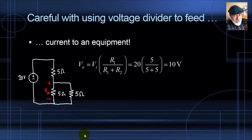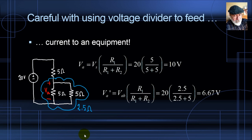But no — if the new device has an equivalent resistance of 5 ohms, connecting it in parallel with the bottom of the voltage divider gives an equivalent resistance of 2.5 ohms (5×5/(5+5)). Now 2.5 ohms is only one-third of the new total resistance of 7.5 ohms, so VA drops to only one-third of 20 volts, which is 6.667 volts.